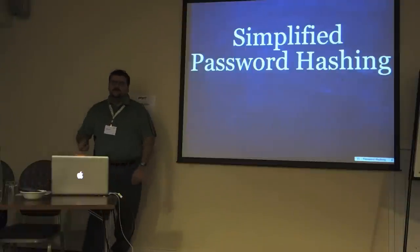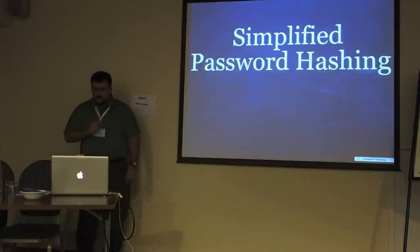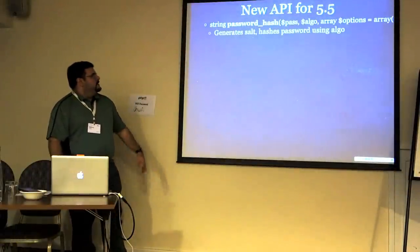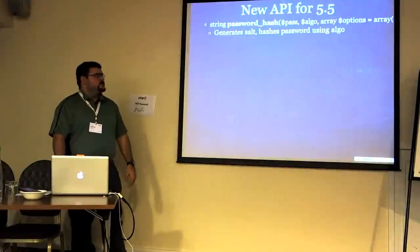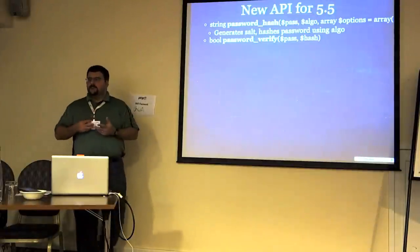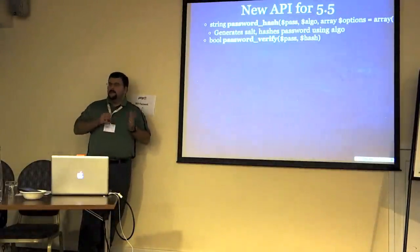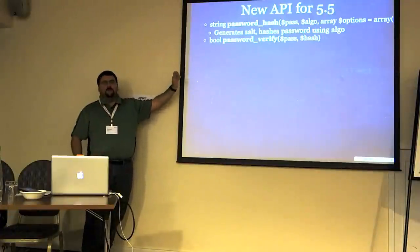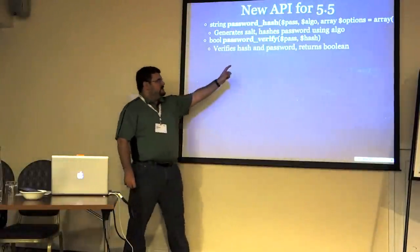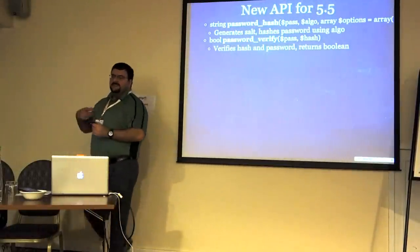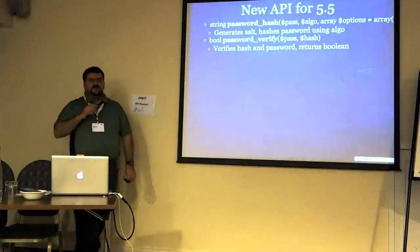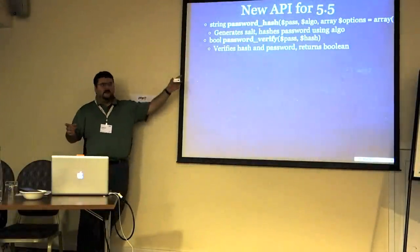In PHP 5.5 we introduced simplified password hashing. The new API is password_hash, which generates a hash using a secure algorithm. Right now we only support one algorithm: Bcrypt. As more secure algorithms become available we'll add them, but the point is it should never produce an insecure output. There's a separate method, password_verify, where you pass in the password and the existing hash and it returns a boolean. It's a second function because we do timing attack prevention in it — use verify, don't use equals-equals.